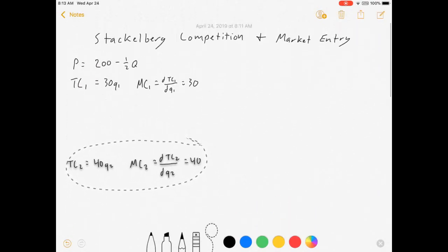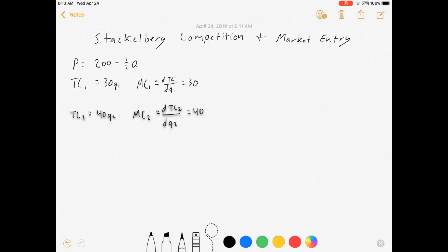But a second firm is going to enter the market. And just for fun, I gave the second firm a higher cost function. Still constant marginal cost, but 40 instead of 30. And this is sometimes relevant if there's like a learning by doing and the incumbent firm has a cost advantage over the entrant. Don't worry about it too much for this example. I'm just doing math here. So firm one is the one who's already there, the incumbent. Firm two is the entrant who wants to join the market.